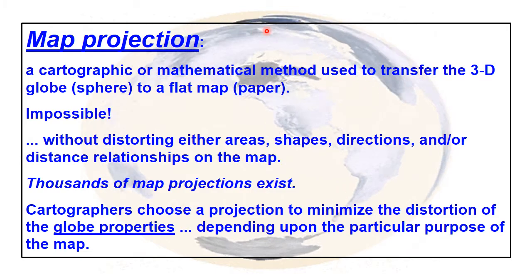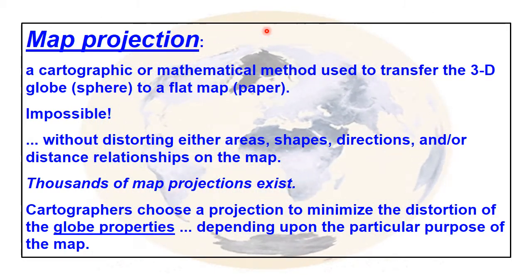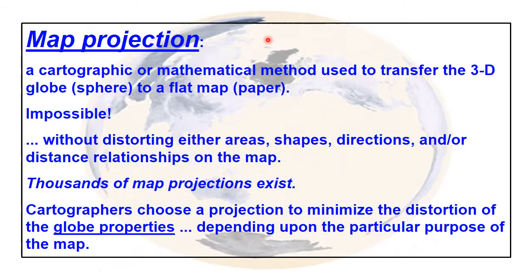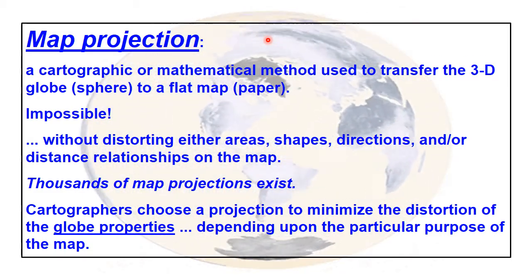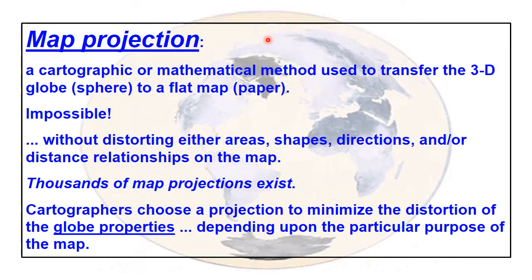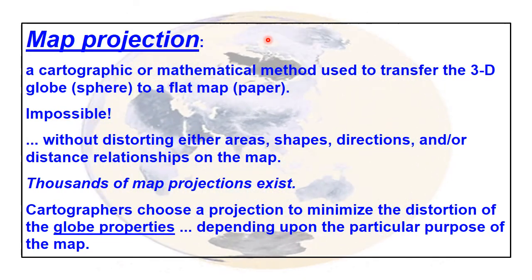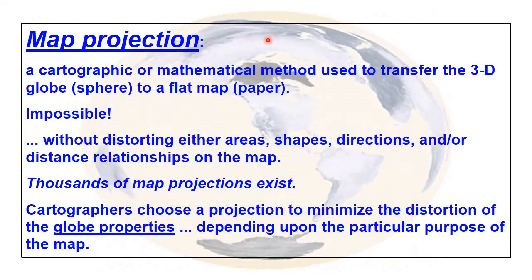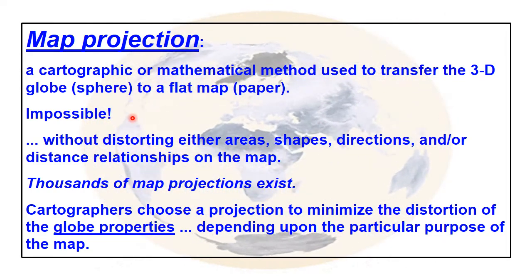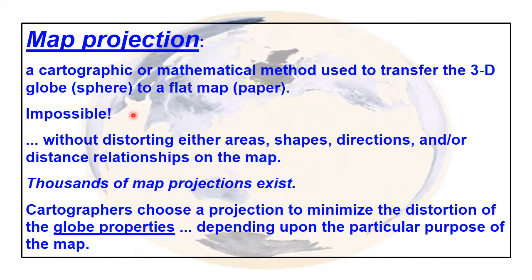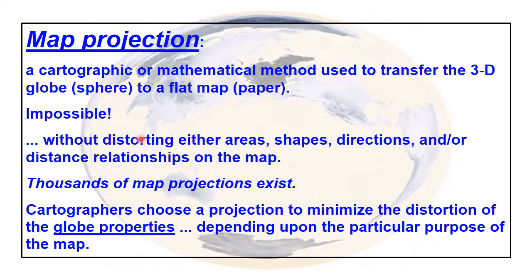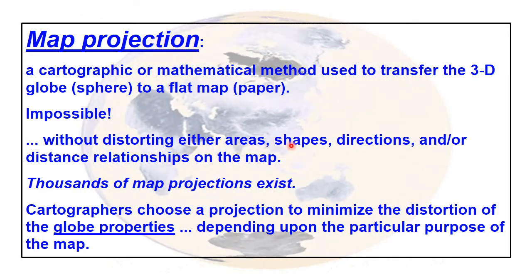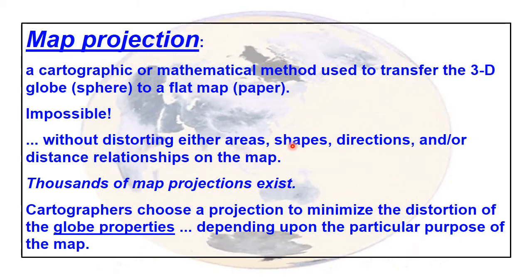Thus the need for a map projection. What is a map projection? It's a mathematical method to transfer the three-dimensional globe to a flat surface — take the sphere and change it to a flat plane or piece of paper. That's actually impossible to do without distorting either the areas, the shapes, the distances, or the directions of things on the map.